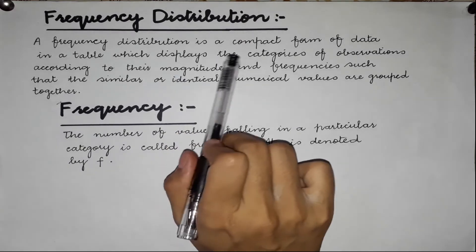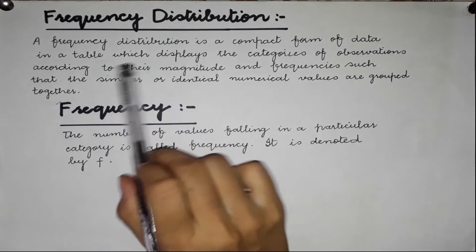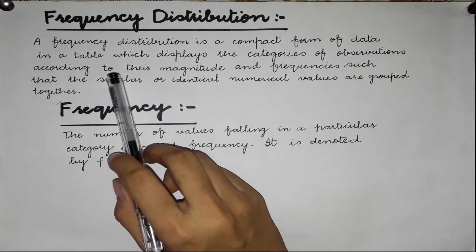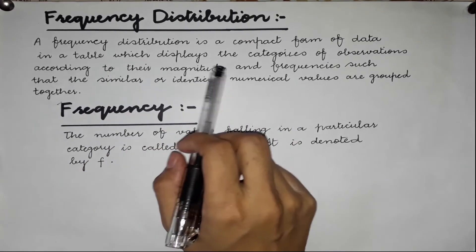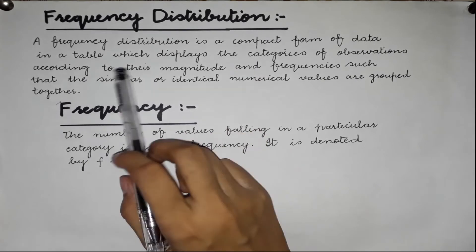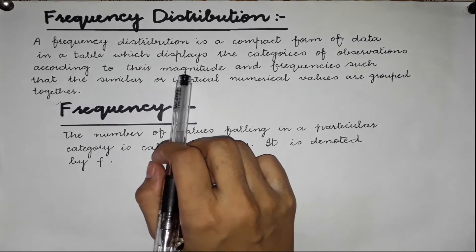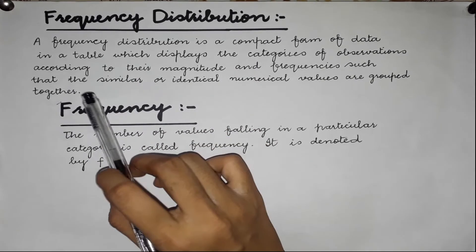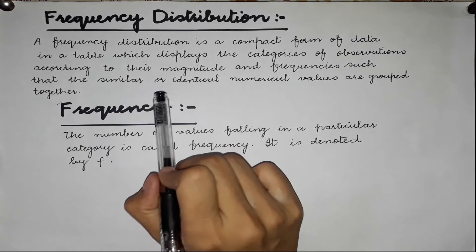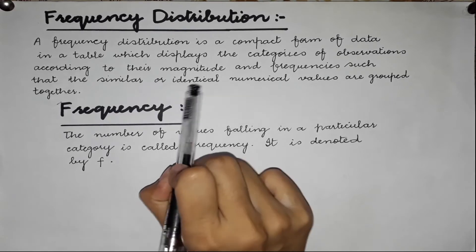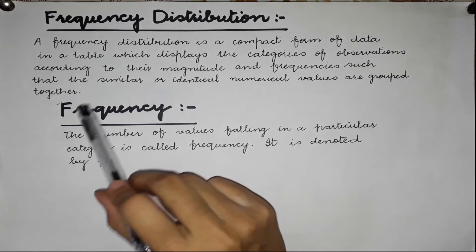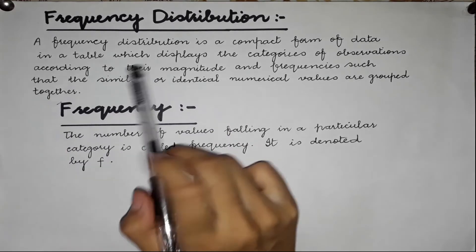Frequency Distribution is a compact form of data in a table which displays the categories of observations according to their magnitude and frequencies, such that the similar and identical numerical values are grouped together.